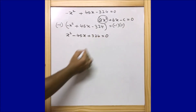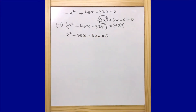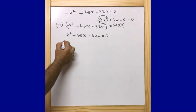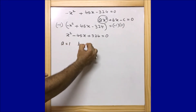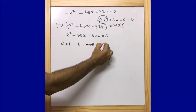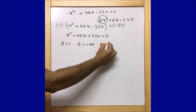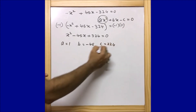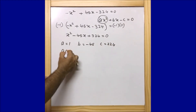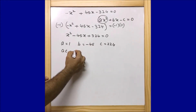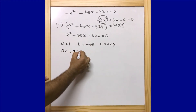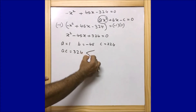In this way we are able to eliminate the negative from the first part of the equation. Now a equals 1, b equals minus 45, and c equals 324. So ac equals 1 times 324, which is 324.